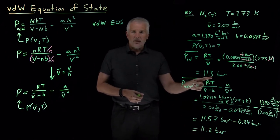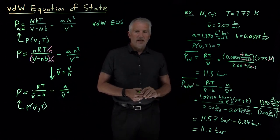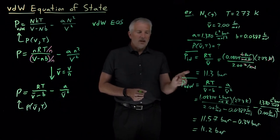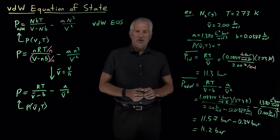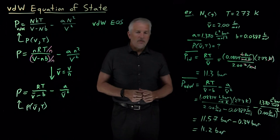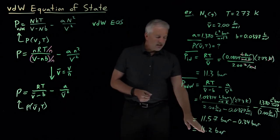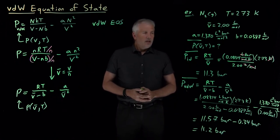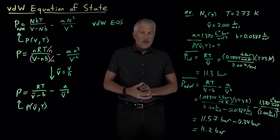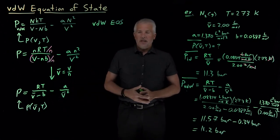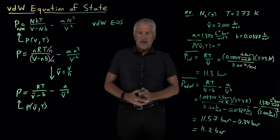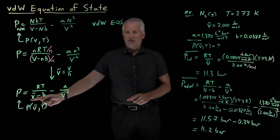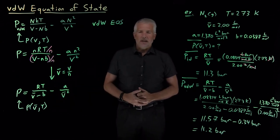There are a couple of interesting things to note. The finite molecular volume increased the pressure, as expected, but that was partially canceled by intermolecular attractions decreasing the pressure. Those two contributions didn't exactly cancel, and the net result is that the Van der Waals gas has a pressure of 11.2 bar — about 1% lower than the ideal gas prediction. At pressures around 10 to 11 atmospheres, the ideal gas law is beginning to break down. If instead we know temperature and pressure and want to solve for molar volume, that's a more complex problem requiring a separate discussion.